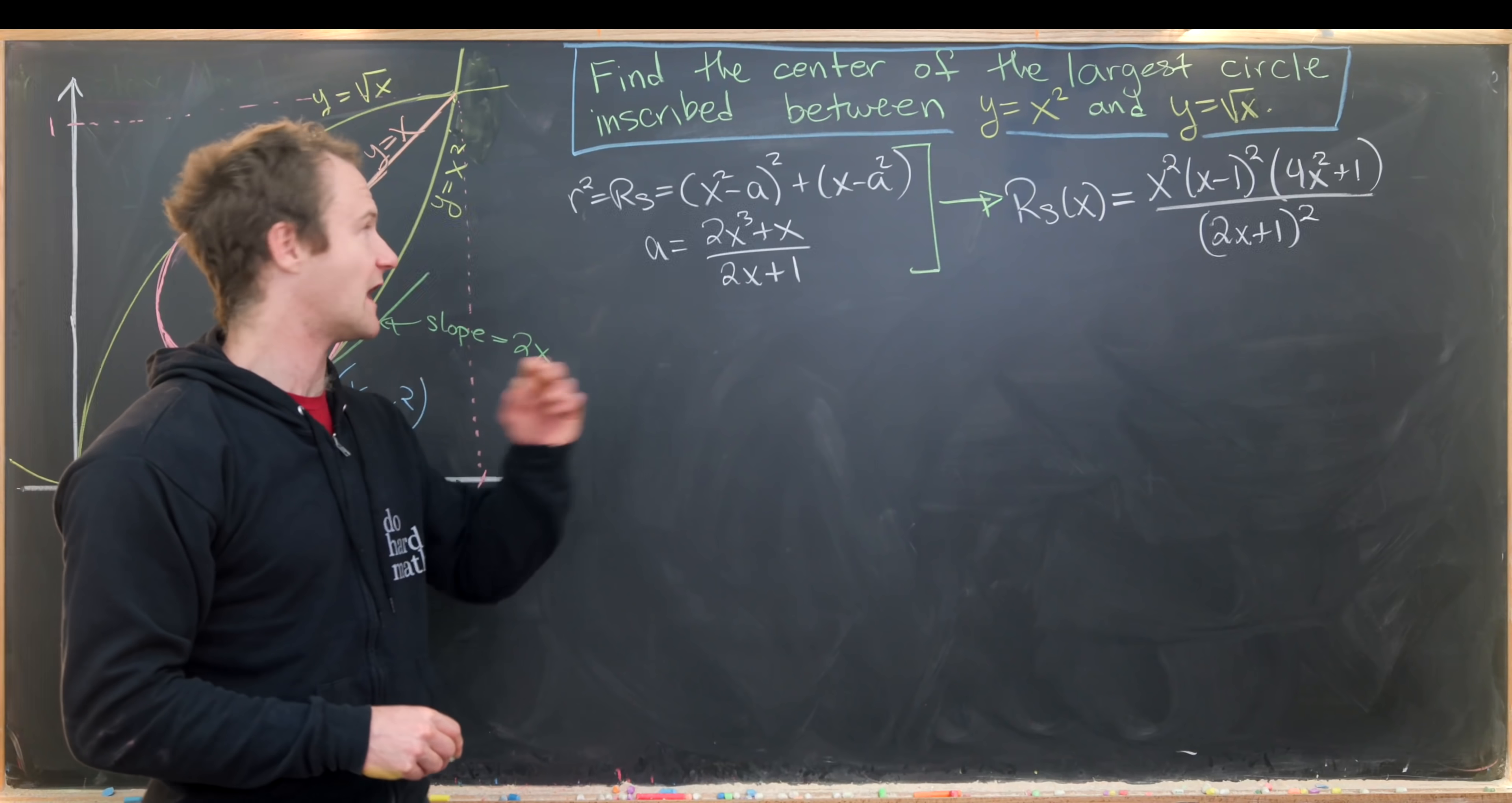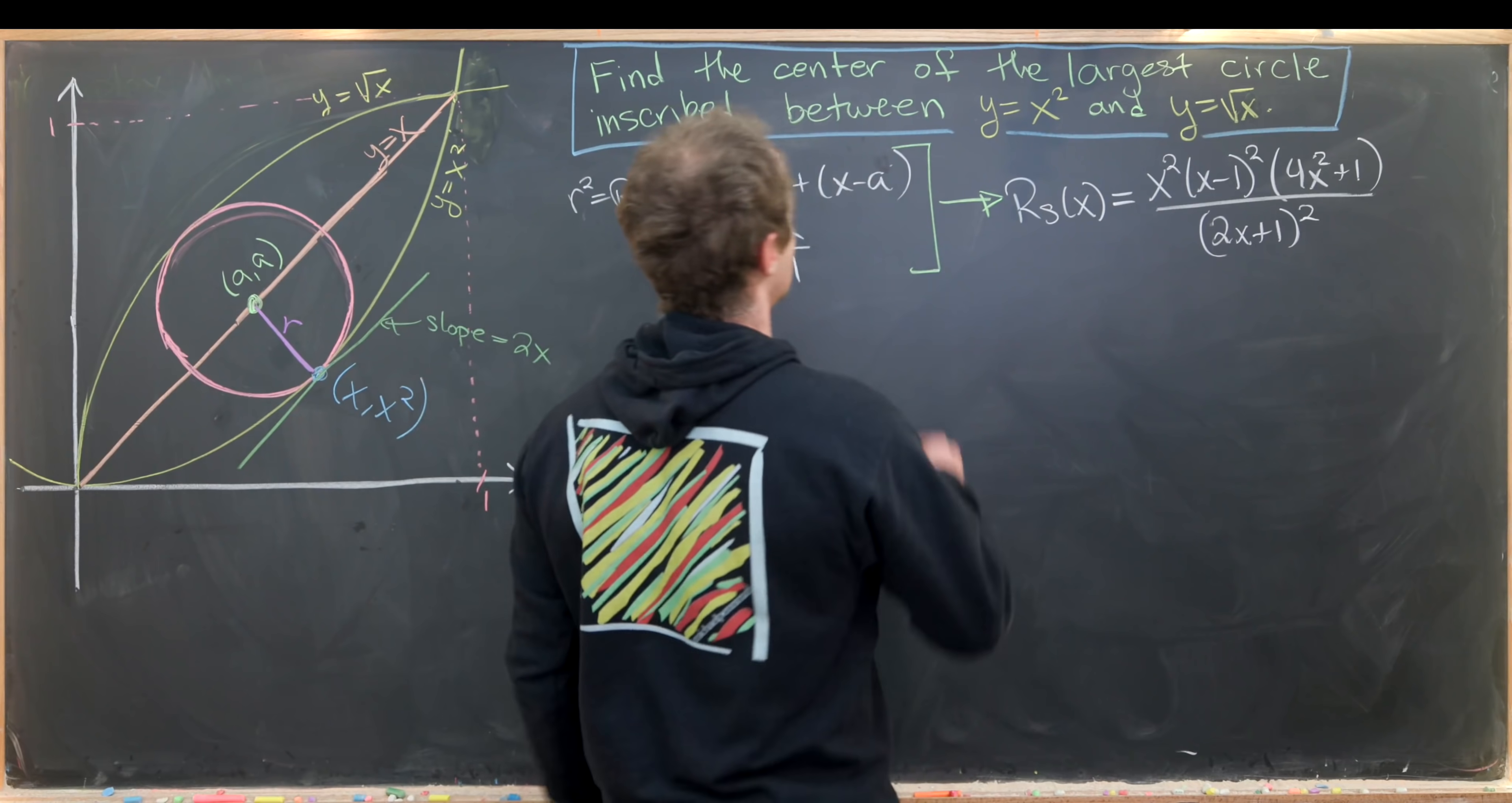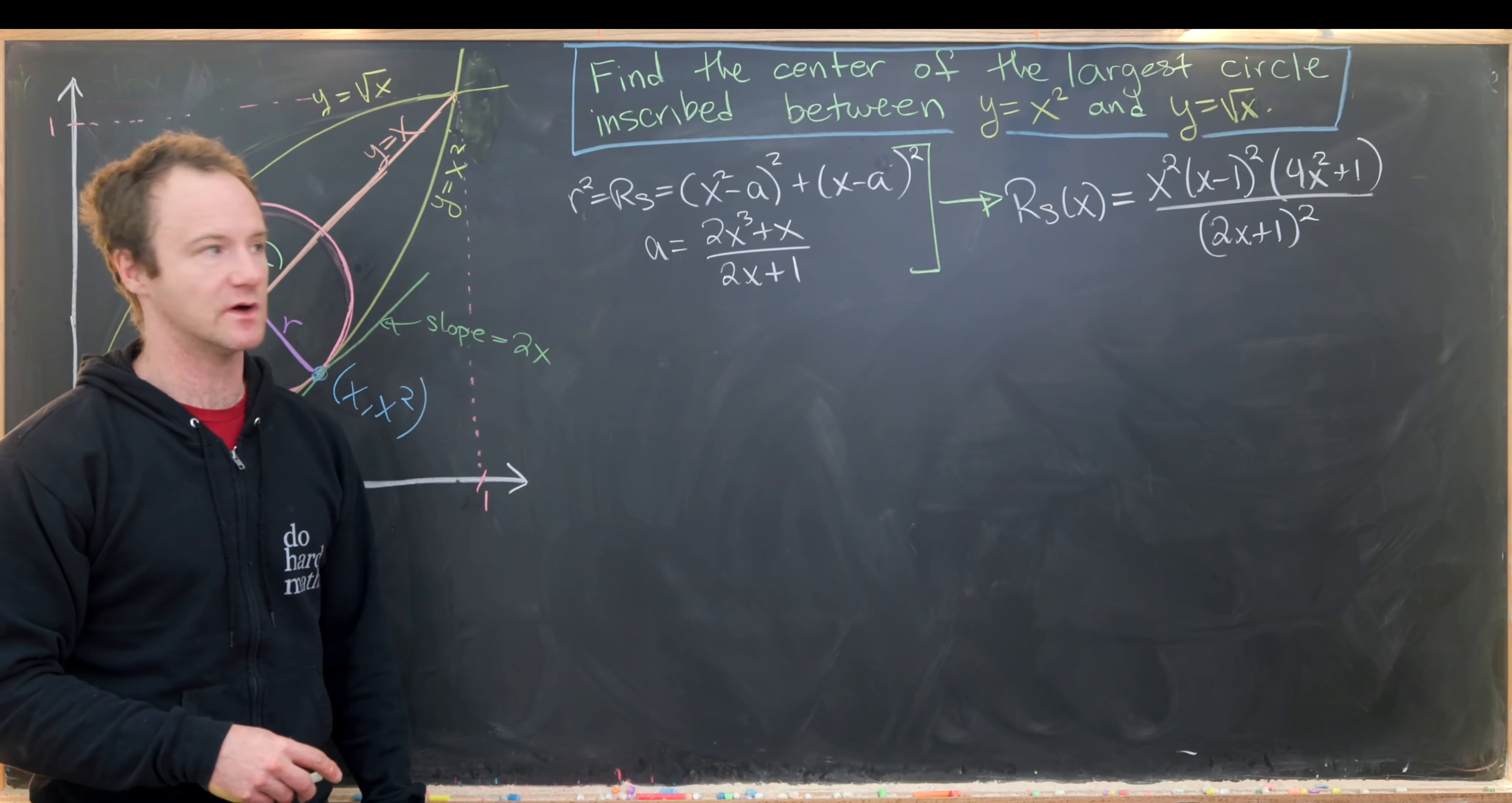On the last board we determined that our radius squared function was x squared minus a quantity squared plus x minus a quantity squared. We also derived a relationship: a equals 2x cubed plus x over 2x plus 1.